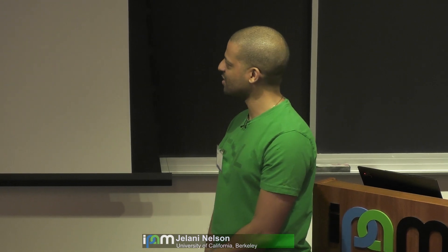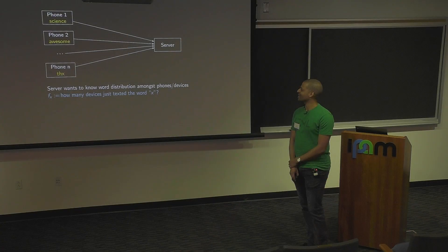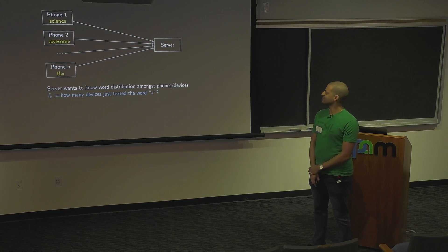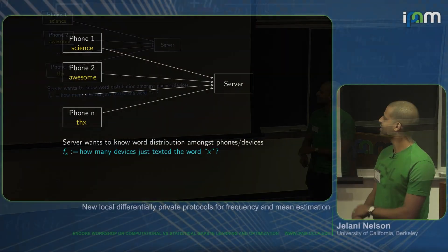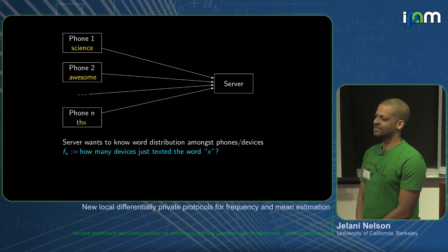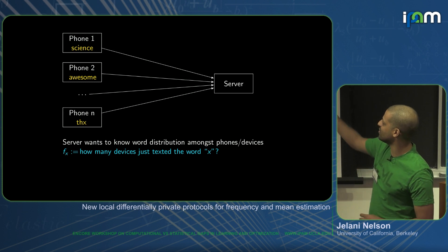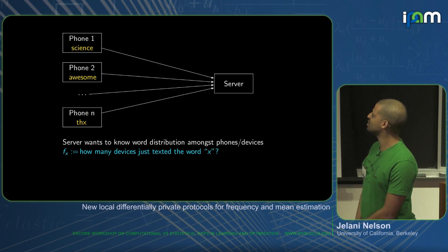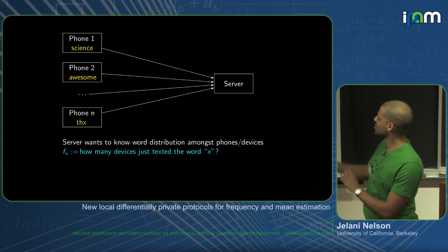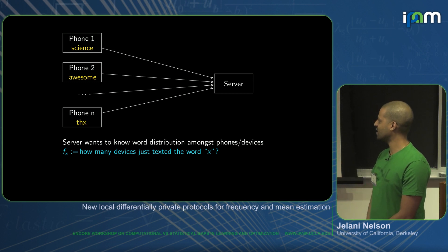How does all this stuff work? I'm not a machine learning expert, but that gets used, which means the server — whoever is running the operating system or the app — needs to basically learn from our data. You can imagine this cartoon example: there are N devices and smartphones, each one has some data like the last word you texted. The server wants to know the word distribution amongst devices, so there's a histogram F.